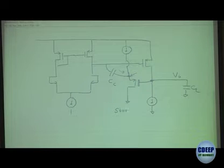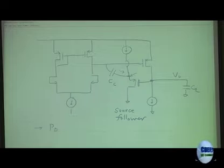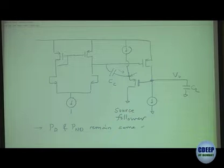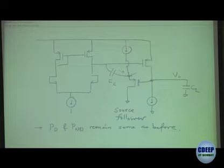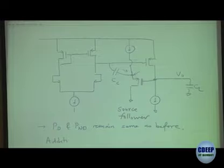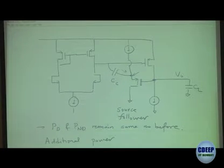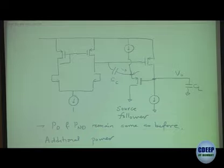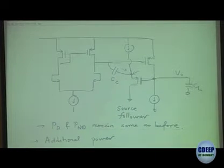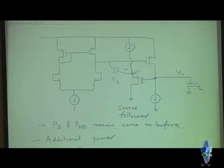The current cannot flow from here back over here, other than parasitic capacitive division at very high frequency. This is a source follower and you will see many papers which talk about this. The poles and zeros remain the same as before.